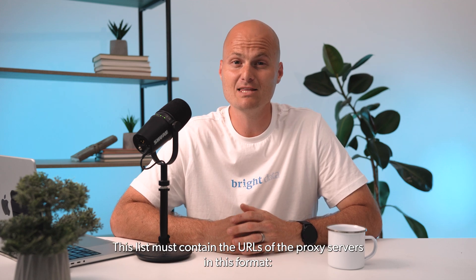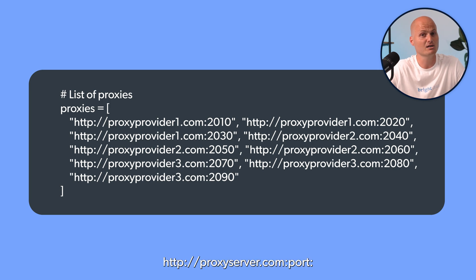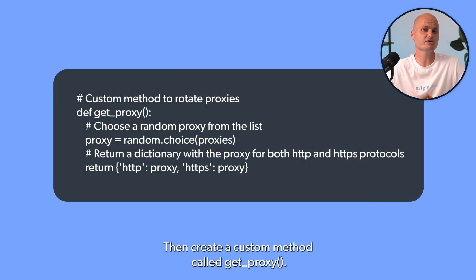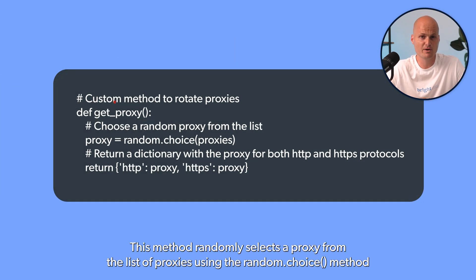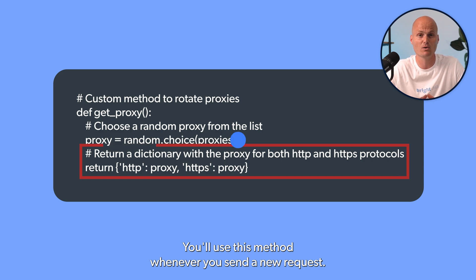The proxy list must contain the URLs of the proxy servers in this format: http://proxyserver.com:port. Then create a custom method called get_proxy(). This method randomly selects a proxy from the list of proxies using the random.choice method and returns the selected proxy in dictionary format, with both HTTP and HTTPS keys. You'll use this method whenever you send a new request.